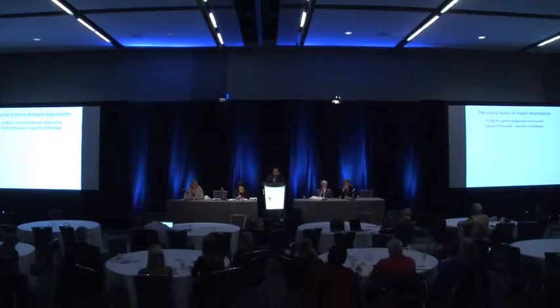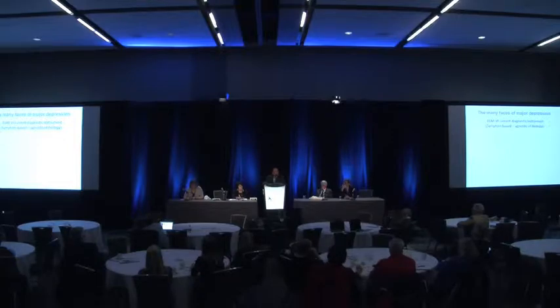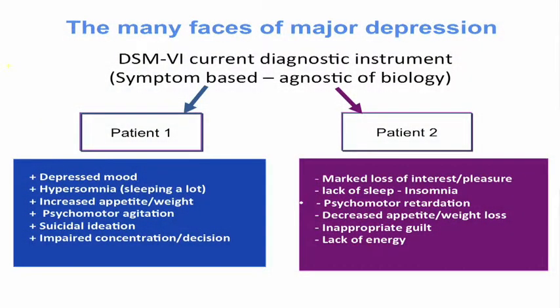Let me come back to the point that John has been making over and over again — let's not just call it depression, it is depressions. If you look at the DSM categorization, we are determining it by symptoms. This is a slide that Pierre prepared, looking at two different patients with different symptoms. One has a depressed mood, is sleeping a lot, increased appetite, psychomotor agitation, thinking about suicide, and impaired concentration — that person gets a diagnosis of depression. The second patient has marked loss of interest or pleasure, is not sleeping much, is agitated, has decreased appetite, feels inappropriately guilty, and lacks energy. What diagnosis is that? Also depression. How can you have two people so different from each other getting the same diagnosis and the same treatment? No wonder our treatments don't work well.